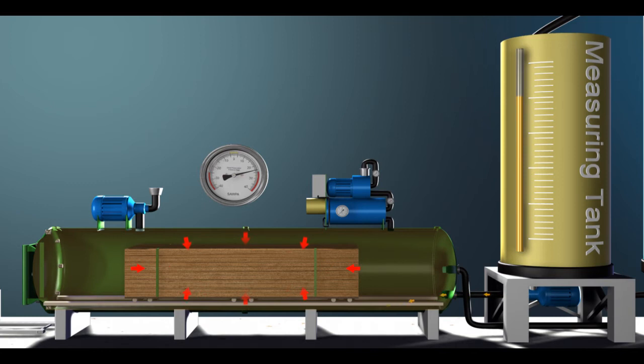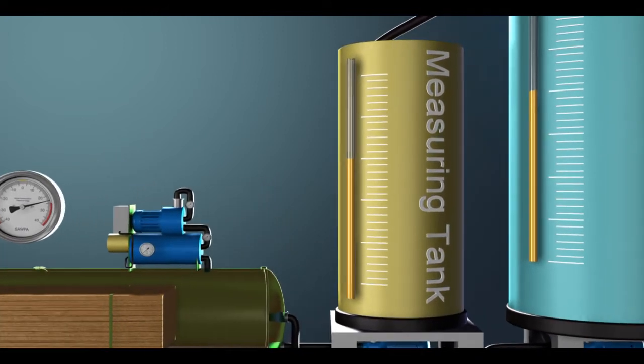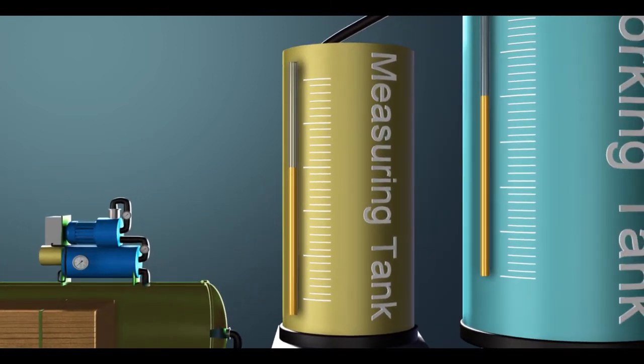The amount of preservative is pre-calculated, based on the volume of the timber in the cylinder and the hazard class of intended use. The readings are taken from a side glass or float level attached to the measuring tank.